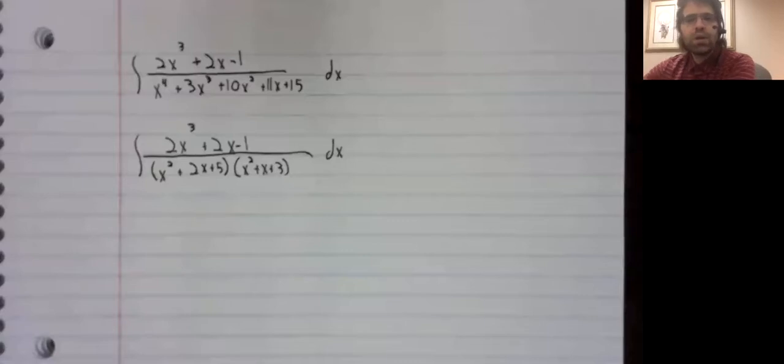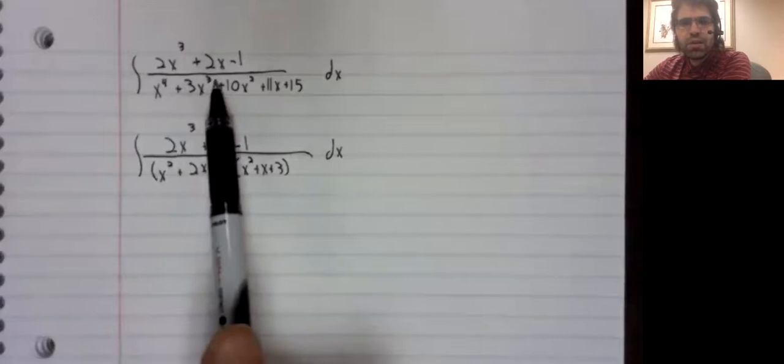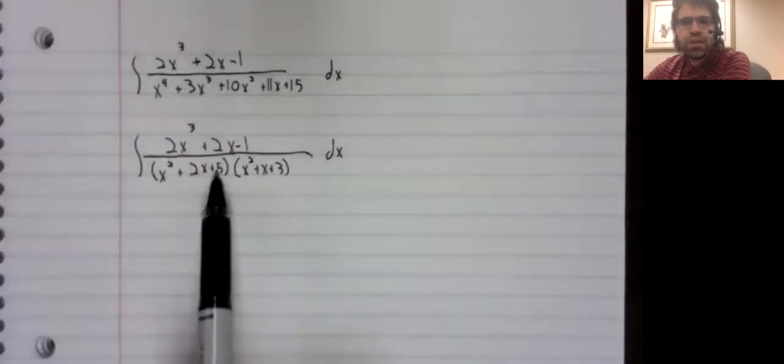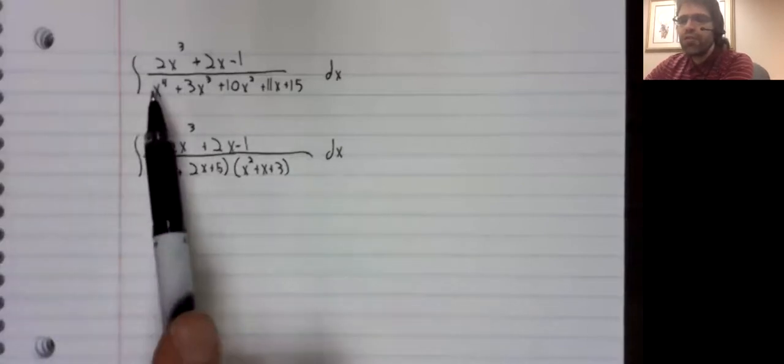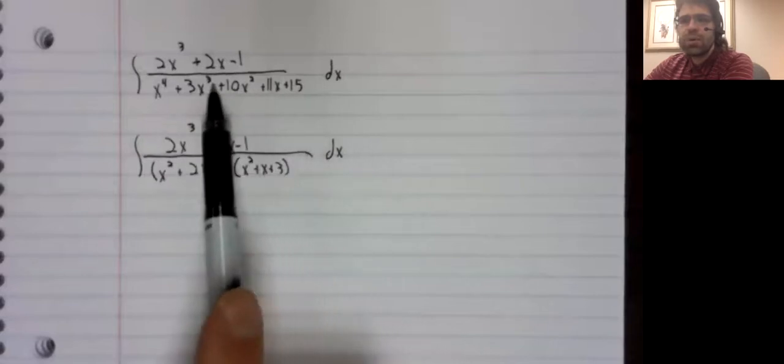So how can we expect to go from here to here? And the real answer to that question is technology. We could use Wolfram Alpha, or MATLAB, or Mathematica, or something like that, to factor this polynomial.